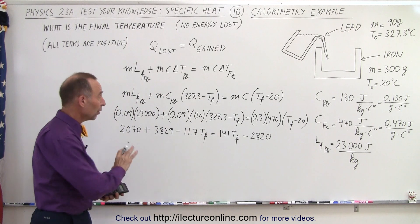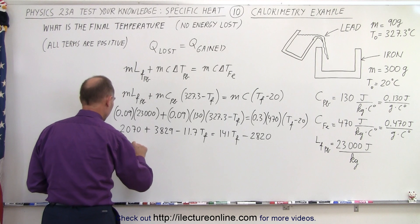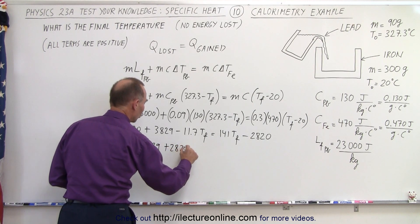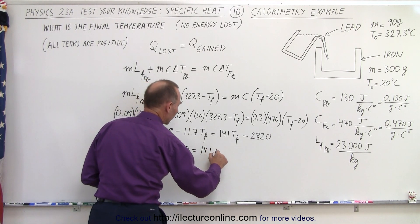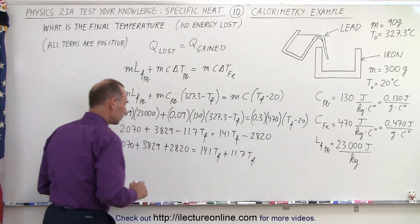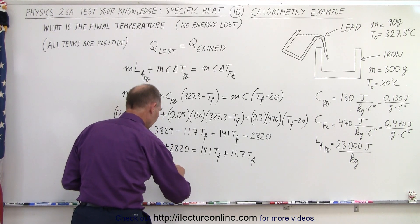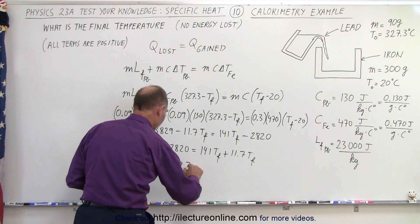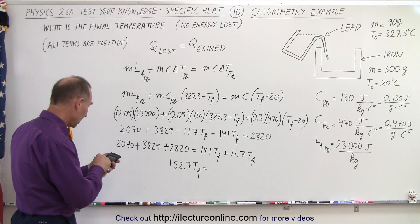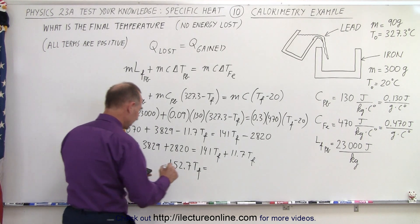Okay, now let's move all the terms with T final to one side, all the numbers to the other side, so we end up with 2,070 plus 3829 plus 2820 equals 141 T final plus 11.7 T final. We're going to reverse the equation, add up all the terms, so adding these together we get 152.7 T final equals, on the other side, 2070 plus 3829 plus 2820, that gives us 8719.